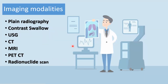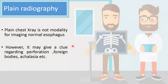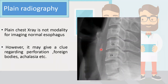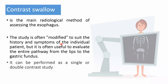Imaging modalities of the esophagus include plane radiography, contrast swallow, ultrasonography, CT, MRI, PET scan, and radionuclide scan. Plain chest X-ray is not a standard modality for imaging the normal esophagus; however, it may give clues regarding perforation, foreign bodies, achalasia, and other conditions. This lateral plain film shows the cervical part of the esophagus with a foreign body impacted in it — a linear opacity anterior to C5–C6 vertebrae.